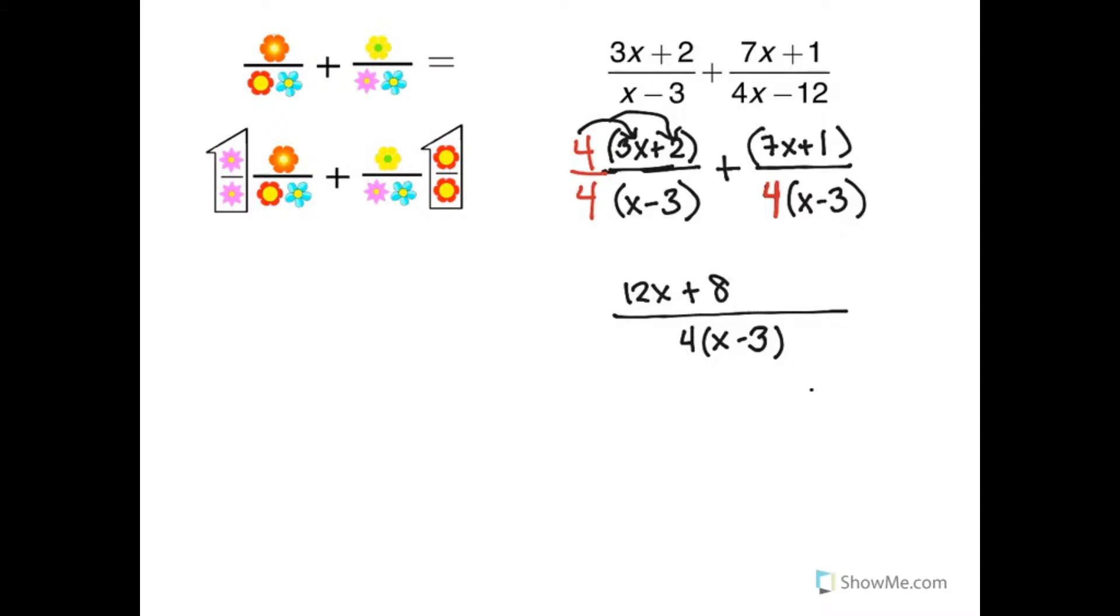Now I didn't multiply the second fraction by anything, so I can just write plus 7x plus 1, and I'm all set there.